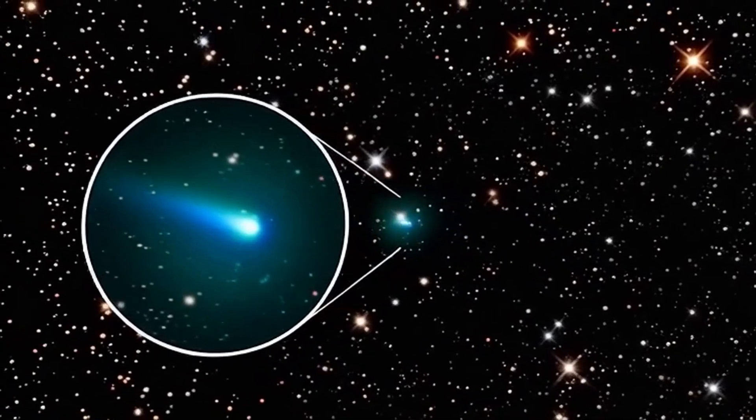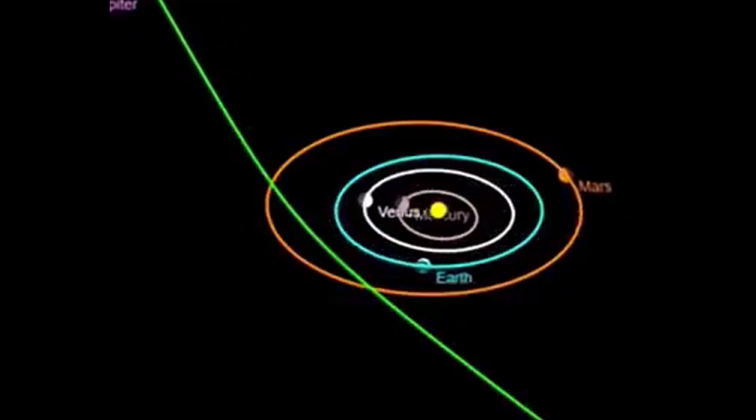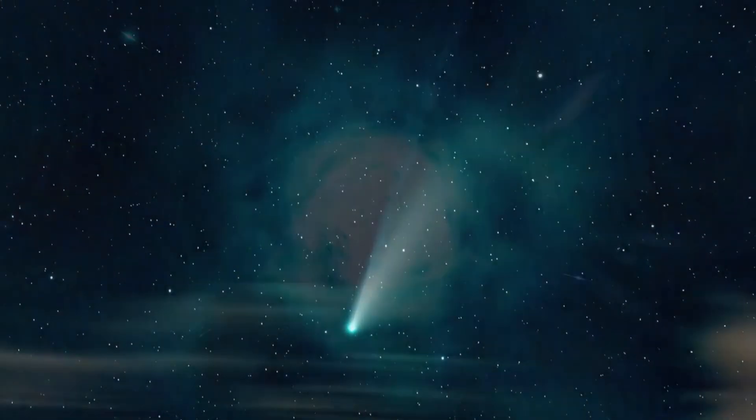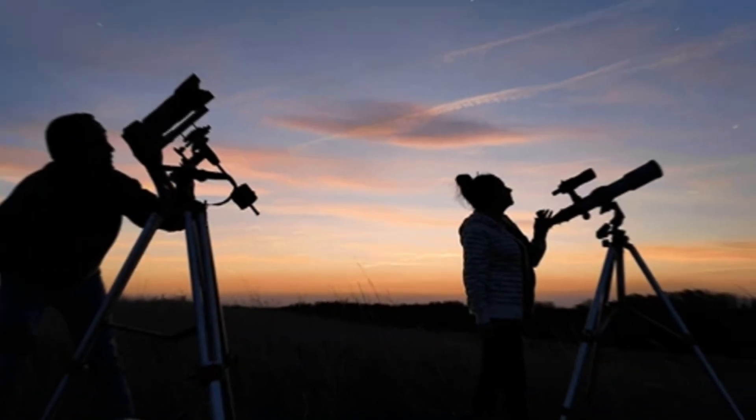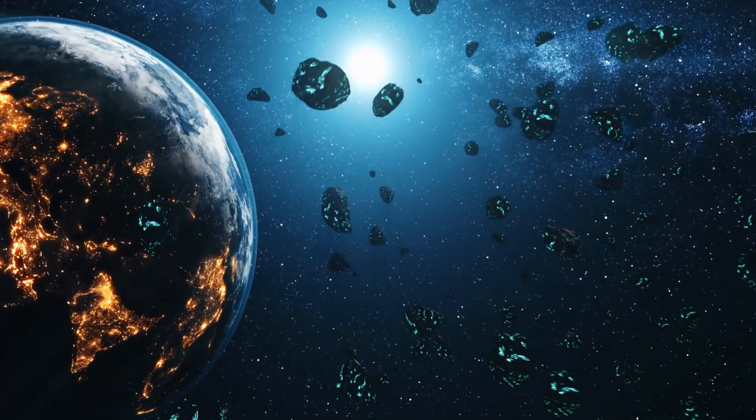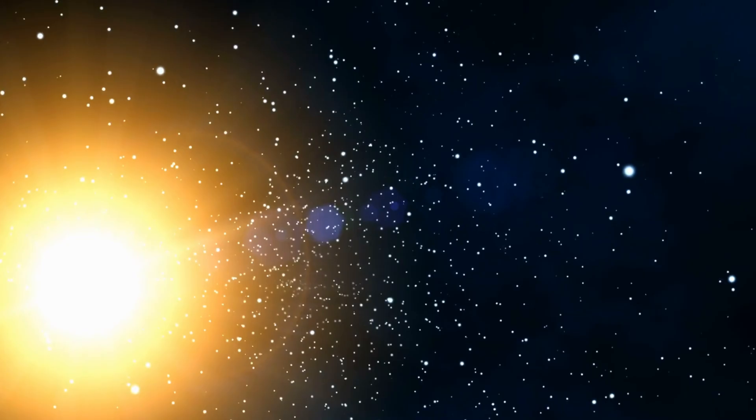Now, as it speeds through the inner solar system at a breathtaking 200,000 miles per hour, the interstellar traveler known as 3i Atlas races ever closer to its perihelion, the point at which it will skim nearest to the sun before being flung once again into the depths of interstellar space. Each passing day brings it deeper into a realm of increasing radiation and solar heat, a crucible that tests the limits of its mysterious composition. Astronomers across the world watch with bated breath, uncertain what will happen next. Will the immense temperature differences and solar wind strip away its outer layers, revealing what lies beneath? Or will the object endure unscathed, its internal structure so dense, so alien in composition, that it shrugs off the sun's fury as if built for the void itself?